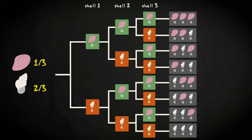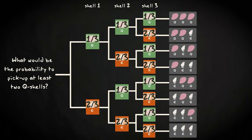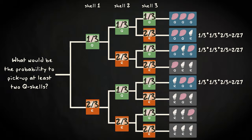Now you know the probabilities for a single event of picking up a shell. It's possible to put the probabilities for every event in a tree diagram and start to calculate the probabilities for combined events. For example, what would be the probability to pick up at least two Q shells? The event contains the sequences QQR, QRQ, RQQ and QQQ as outcomes. The probability for the first three of these sequences is one third times one third times two thirds, which is two twenty-sevenths. The probability for the sequence QQQ is one twenty-seventh. Adding up these four probabilities gives seven twenty-sevenths.